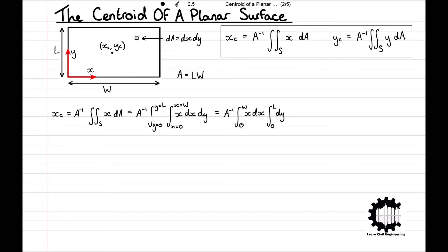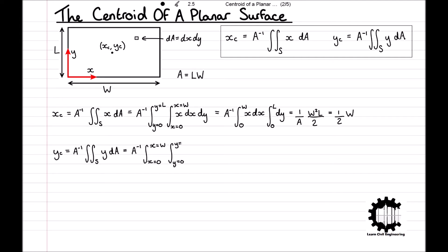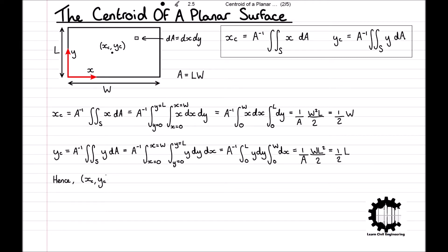Carrying out this calculation gives 1 divided by A times by W squared times L divided by 2, which simplifies to half W. Then, carrying out the same process for YC — this time integrating Y with respect to Y and then with respect to X — we get YC equal to 1 over A times WL squared divided by 2, which simplifies to half L. Hence XC YC is equal to (half W, half L), which confirms our thoughts from before.